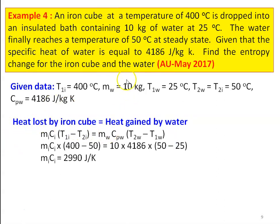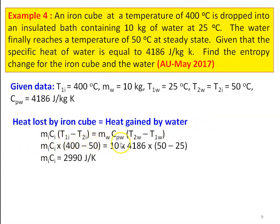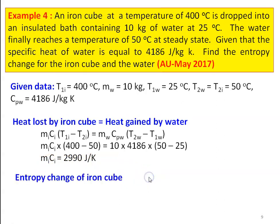Heat lost by the iron cube equals heat gained by the water. Setting mi·ci·(T1i − T2i) = mw·cpw·(T2w − T1w): mi·ci × (400 − 50) = 10 × 4186 × (50 − 25). Solving, the product mi·ci = 2990 J/K. The entropy change of the iron cube: ΔSi = mi·ci·ln(T2i/T1i) = 2990 × ln((50+273)/(400+273)) = −2194.9 J/K.